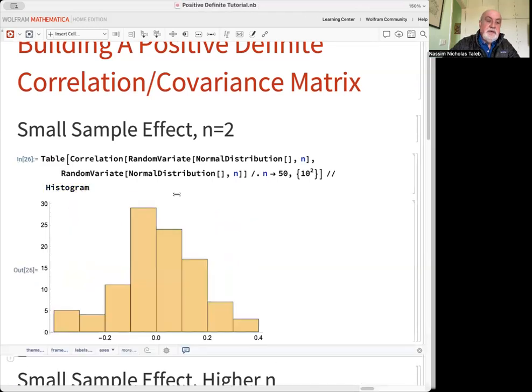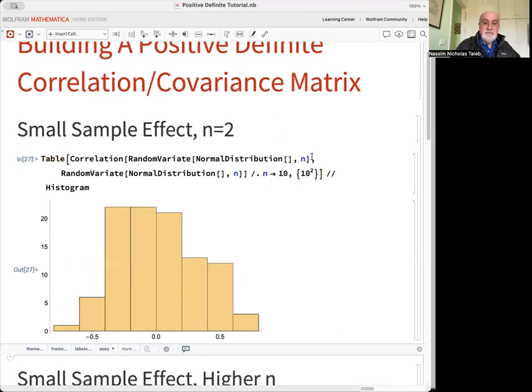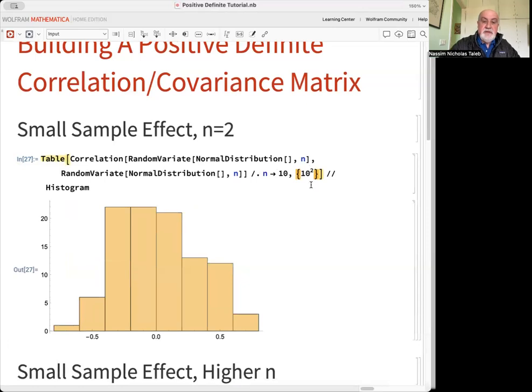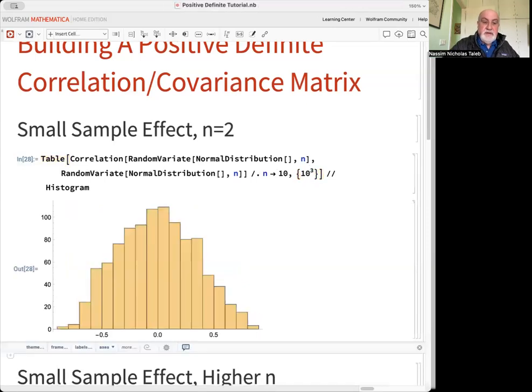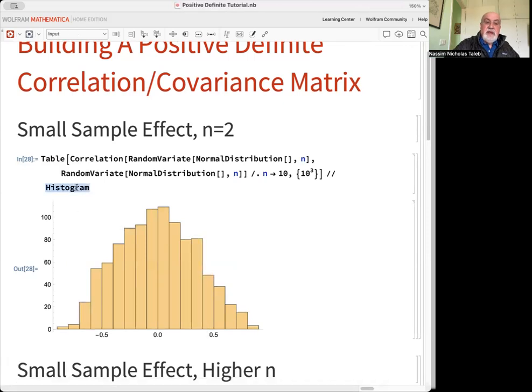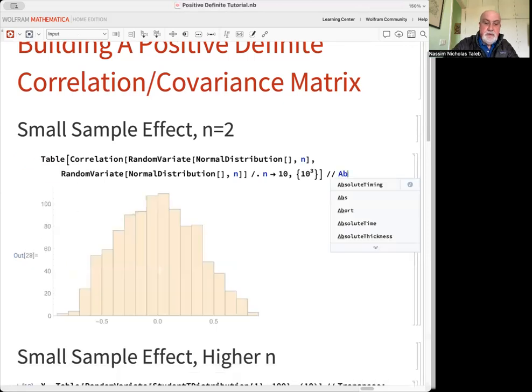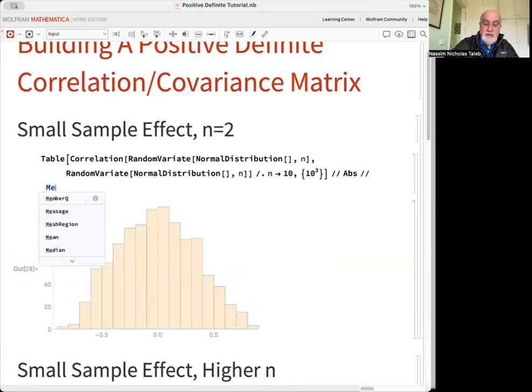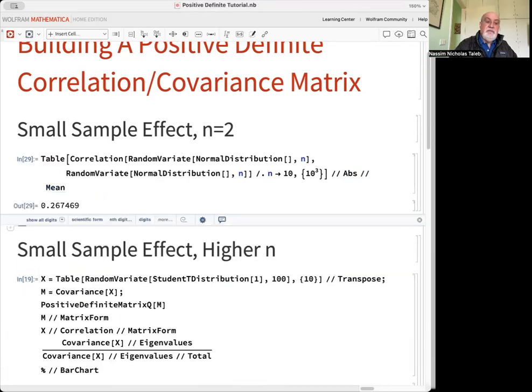For 50, it's sort of better than what I do for 10. Let's increase the sample size. Look at the map, and we look at absolute value. The mean absolute correlation is going to be 26%.